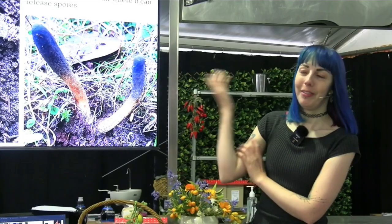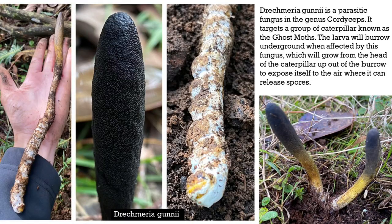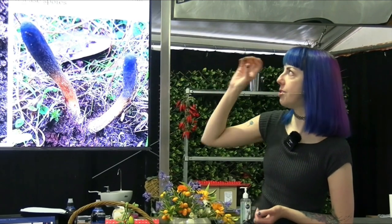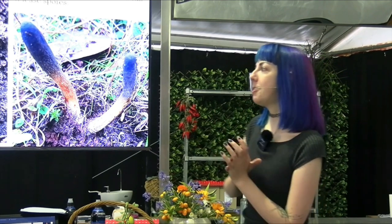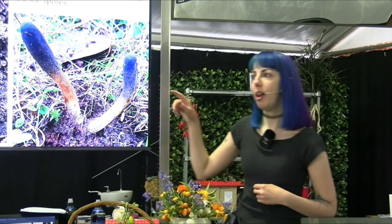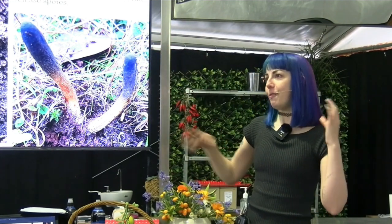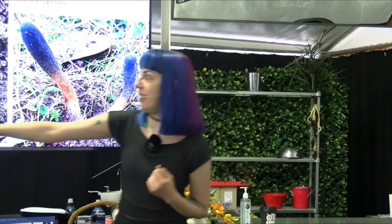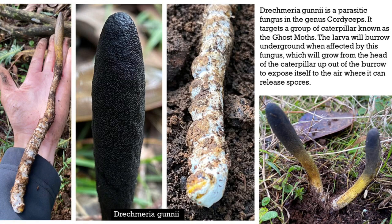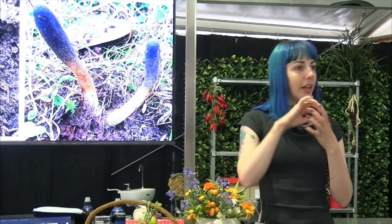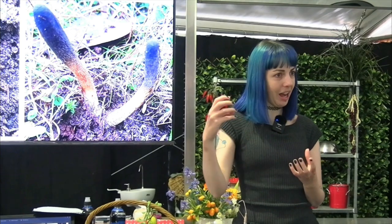Cordyceps is one of my favourite mushrooms. It parasitizes on the Australian ghost moth — the larvae burrow underground and are affected by the fungus, which grows from the base of the caterpillar and comes out into the air where it can release its spores. It also only grows under a particular type of plant, making this interaction between bug and tree very unique. You can actually see the caterpillar portion and the mushroom portion — the whole caterpillar has been myceliated, so it's actually white with mycelium. It's no longer a bug, it's actually mycelium.